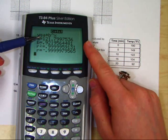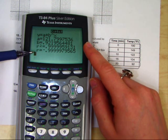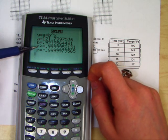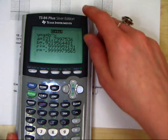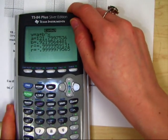You will get the a, the b, and hopefully the r squared and the r value. If you don't have r squared and r, that just means your diagnostics are not on, which we can fix later on.